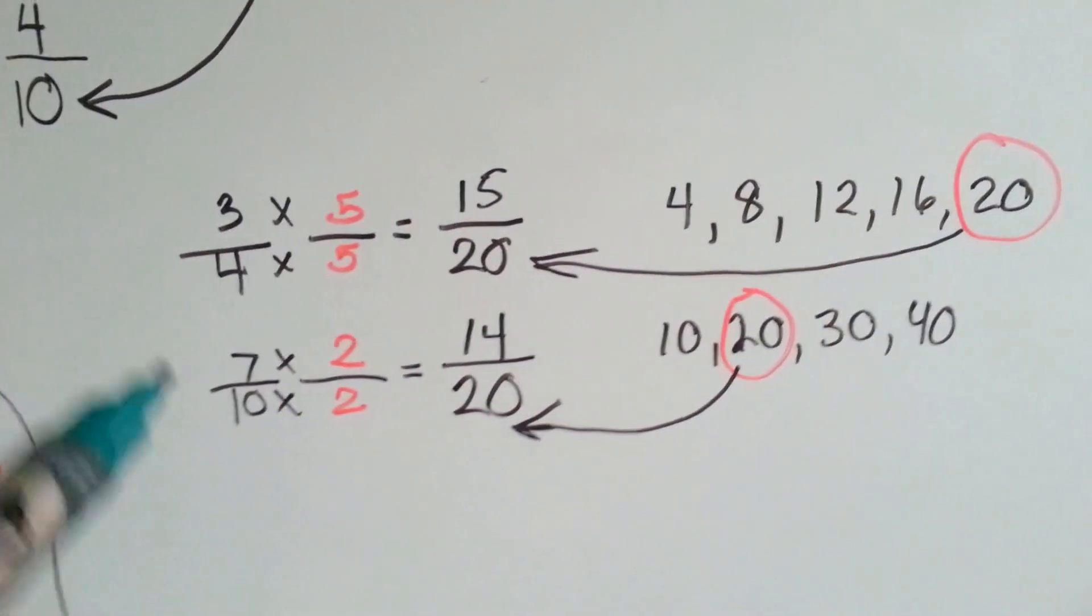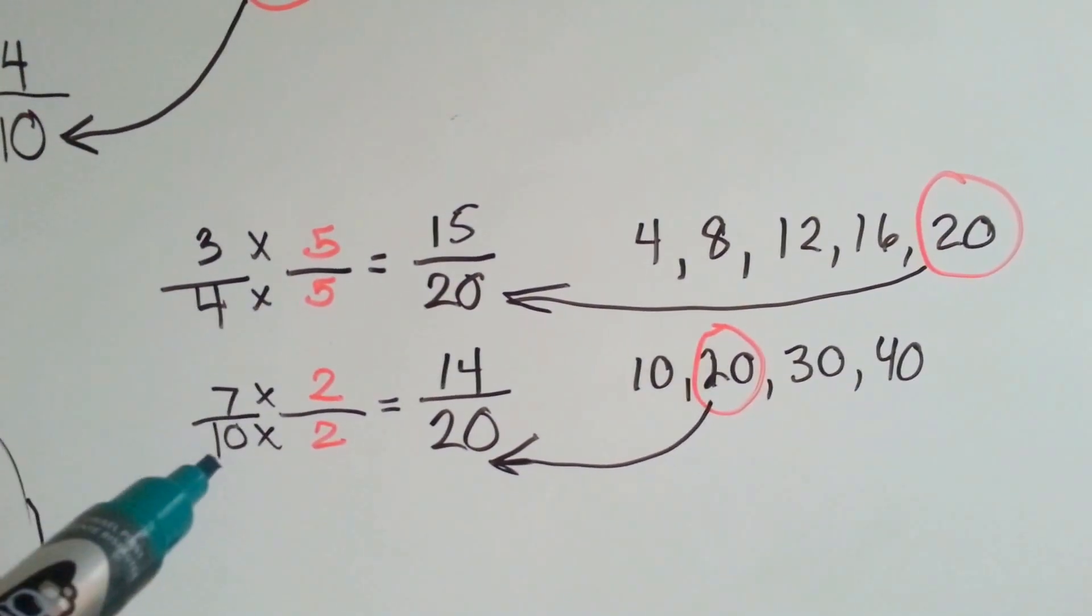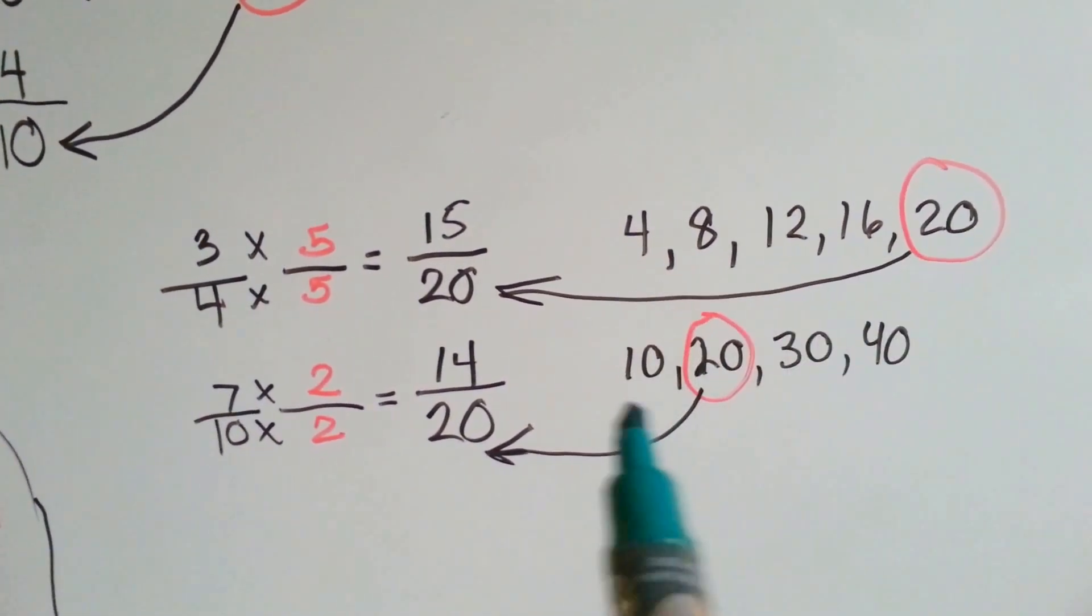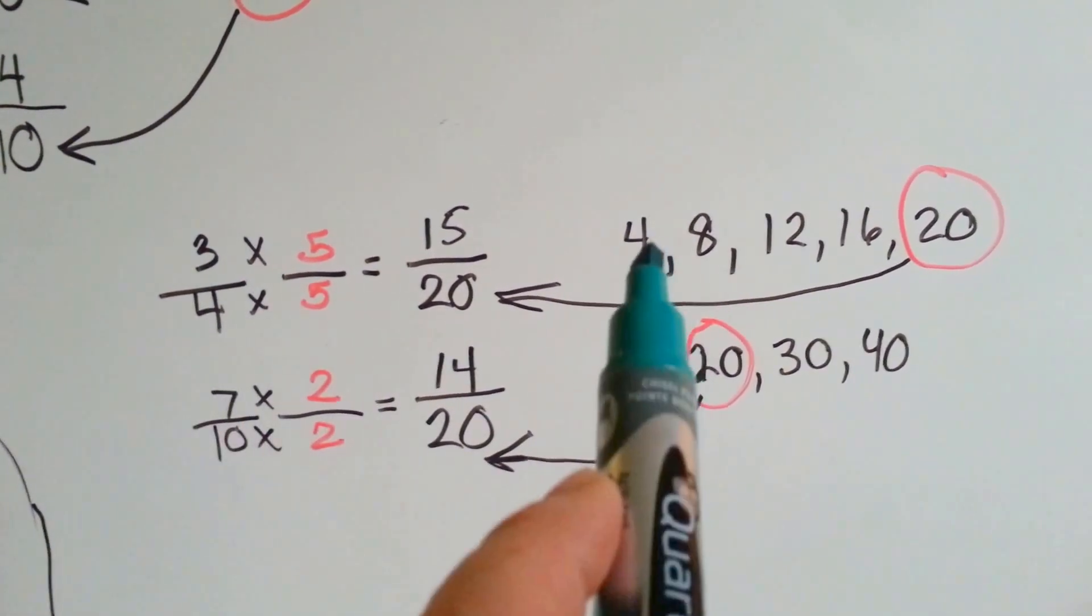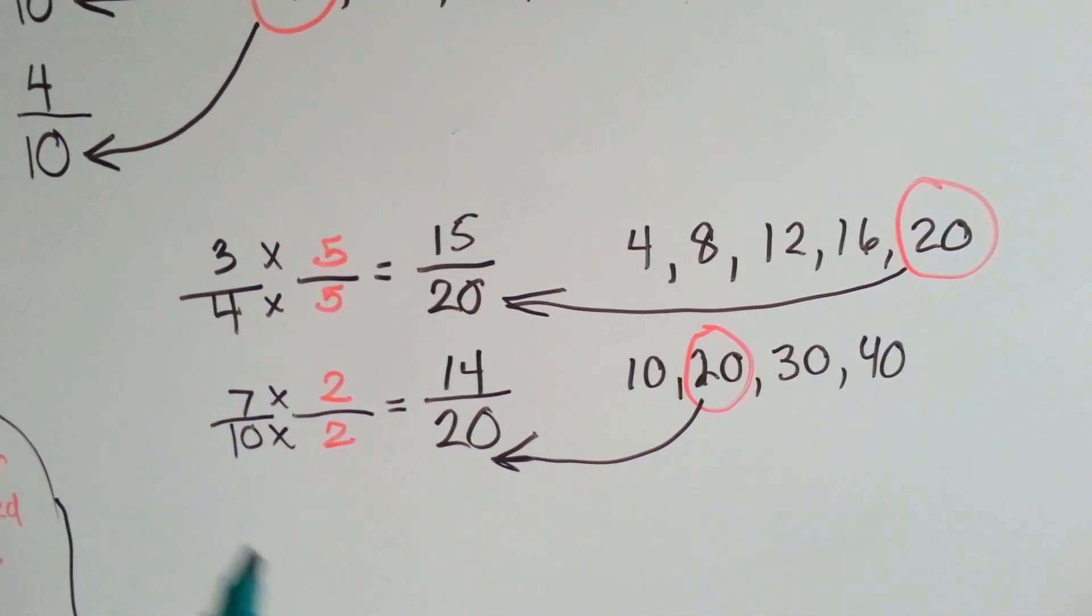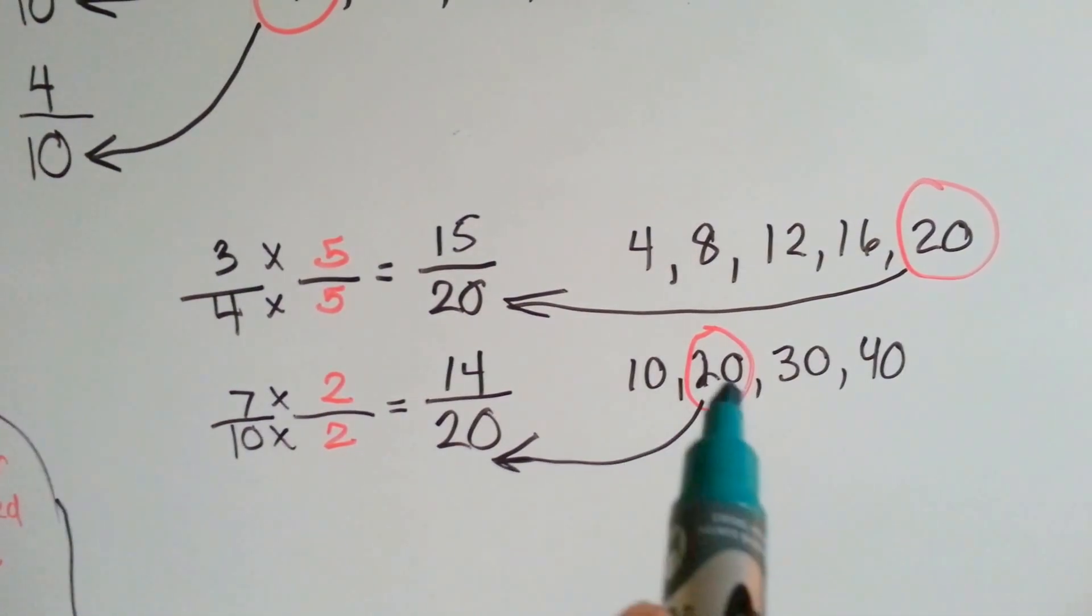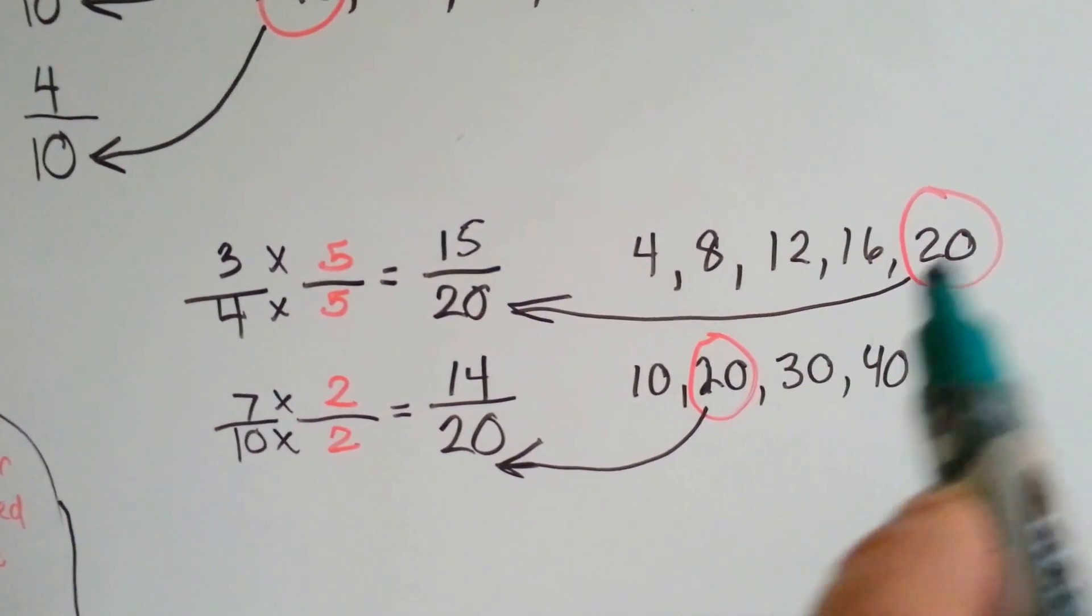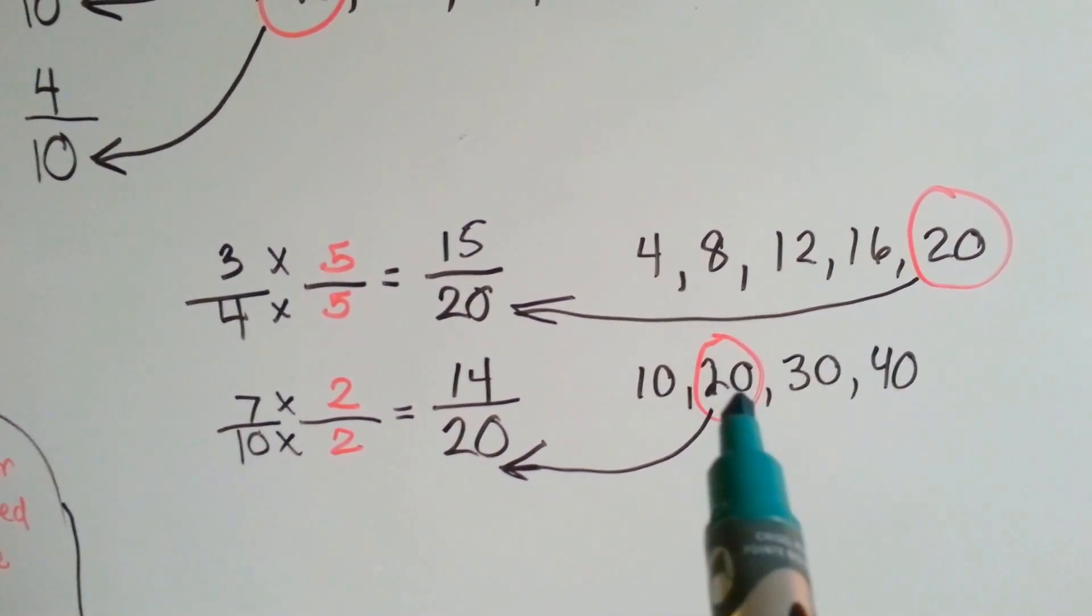Now let's look at this one. 3 fourths and 7 tenths want to meet. So we list their multiples, their answers in the times table. 4 is 4, 8, 12, 16, 20. 10 is 10, 20, 30, 40. We don't need to go any farther. They both have a 20 in common. That's the smallest number.